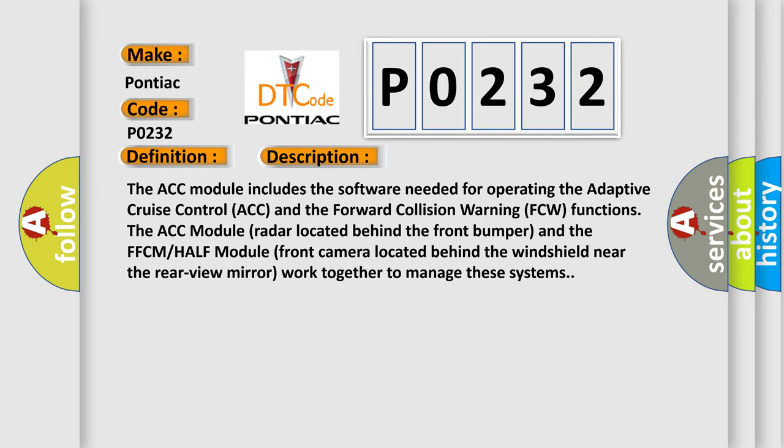The ACC module radar located behind the front bumper and the FCW module front camera located behind the windshield near the rear view mirror work together to manage these systems.